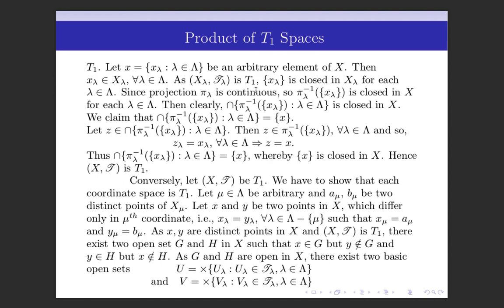Since (Xλ, Tλ) is T1, the singleton {xλ} is closed in Xλ for each λ∈Λ. Since each projection πλ is continuous, the inverse image of {xλ} under πλ is closed in X — because the inverse image of any closed set under a continuous function is closed. We claim that the intersection ∩{πλ⁻¹({xλ}) : λ∈Λ} equals the singleton {x}.